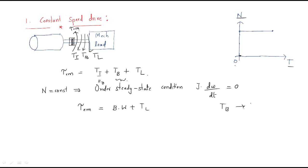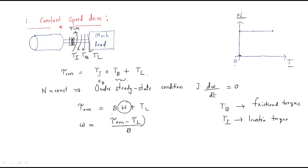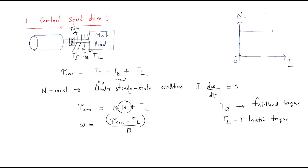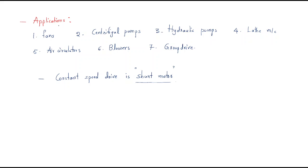T_B is the frictional torque and T_A is the inertia torque. Finally, we can write speed ω = (T_e − T_L) / B. By varying the load torque while using this relation, the speed remains constant. This is the relationship between speed, electromagnetic torque, load torque, and the frictional constant B.